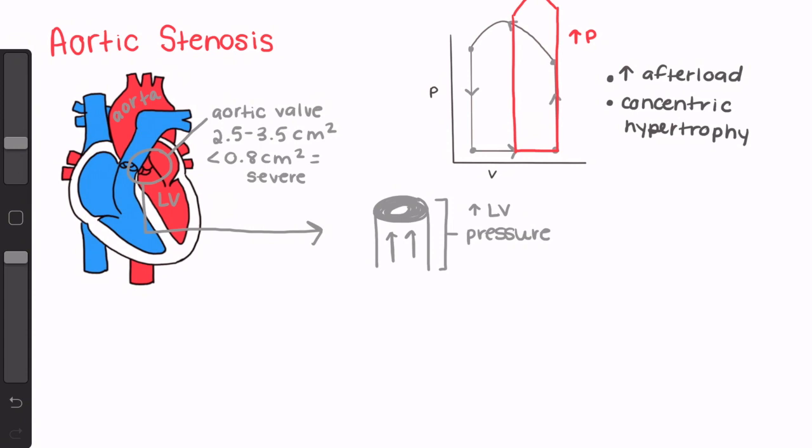Unfortunately, this progressive compensation increases myocardial oxygen needs because of the bigger size while decreasing oxygen supply because of subendocardial compression. This, of course, can lead to myocardial ischemia and left ventricular failure.